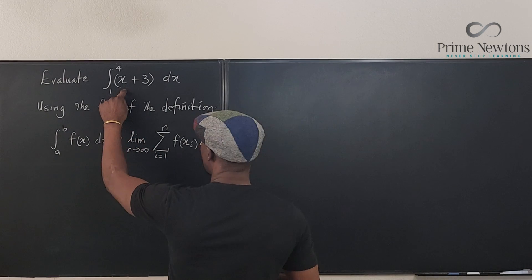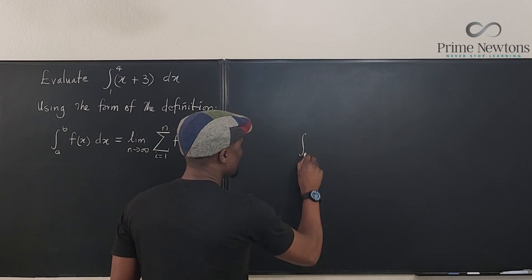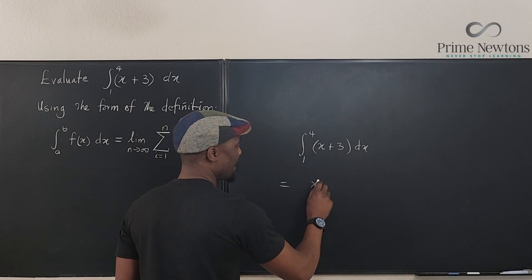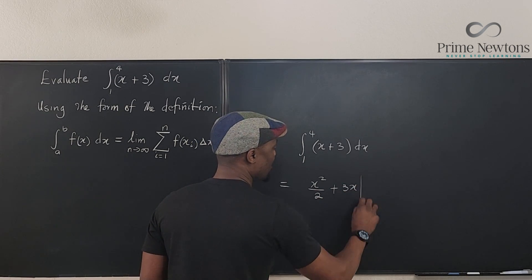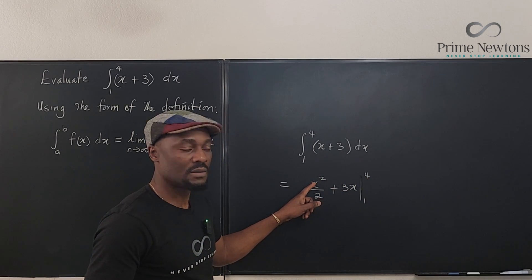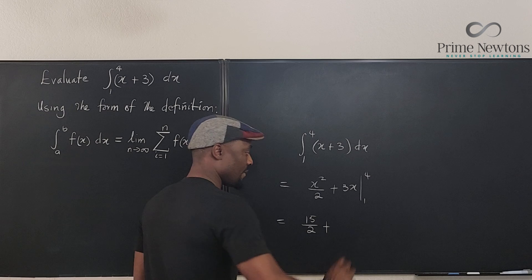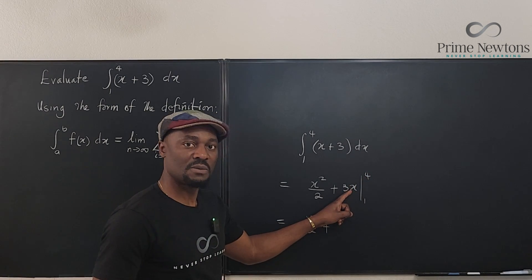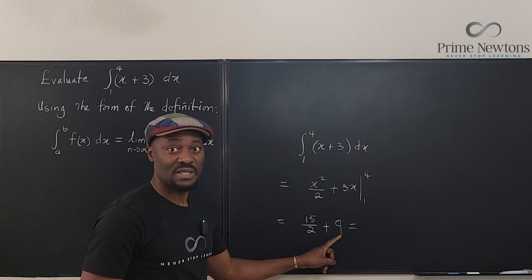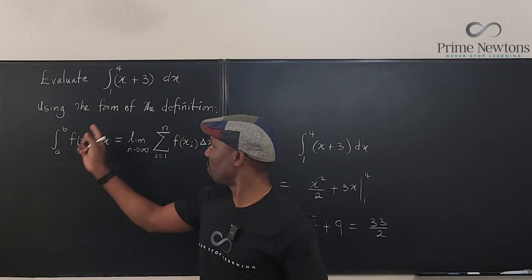For example, let's look at this integral. If I gave you this as a calculus student and said integrate it, you'd say this is the integral from 1 to 4 of x plus 3 dx. Integrating x gives x squared over 2, plus 3x, evaluated from 1 to 4. Plugging in 4 gives 16; plugging in 1 gives 1. So 16 minus 1 is 15, giving 15 over 2 for the first part. Plugging in 4 gives 12; plugging in 1 gives 3. So 12 minus 3 is 9, which is 18 over 2. Then 15 plus 18 is 33, so the value of this definite integral is 33 over 2.